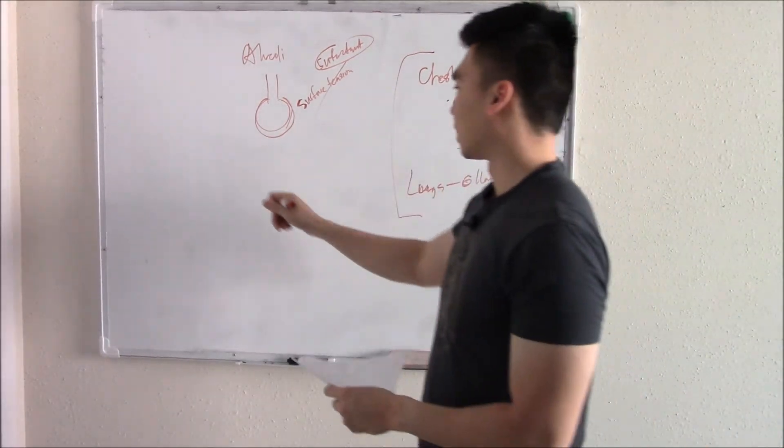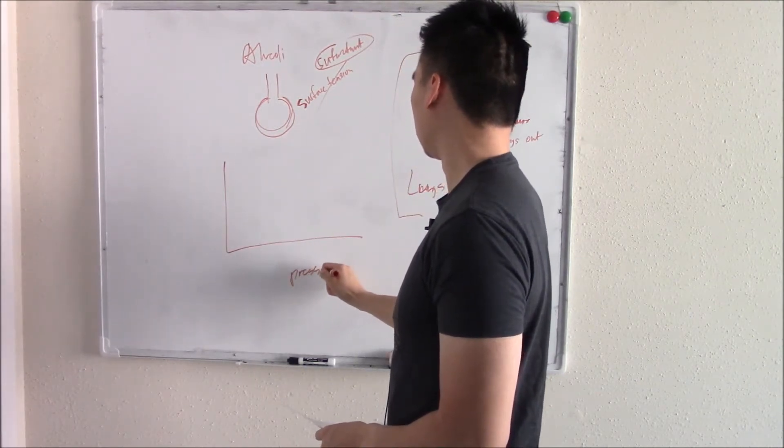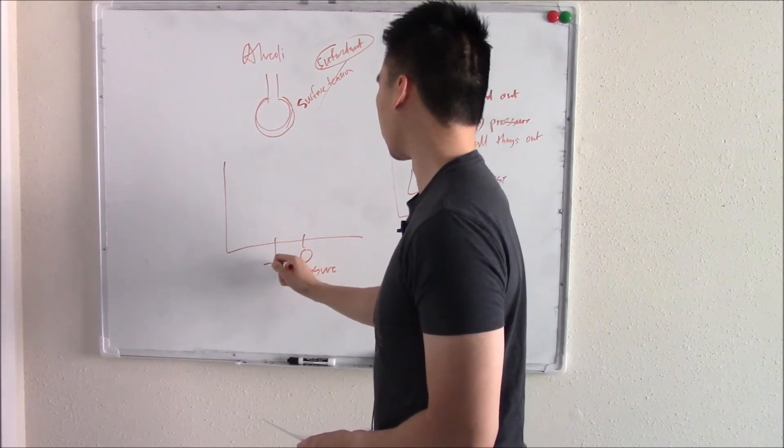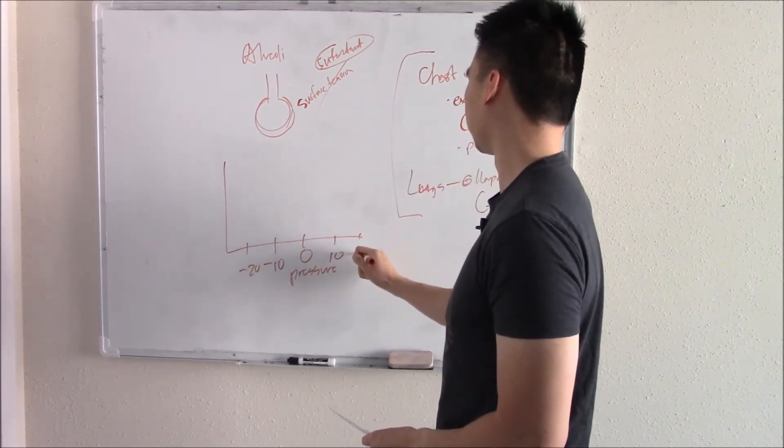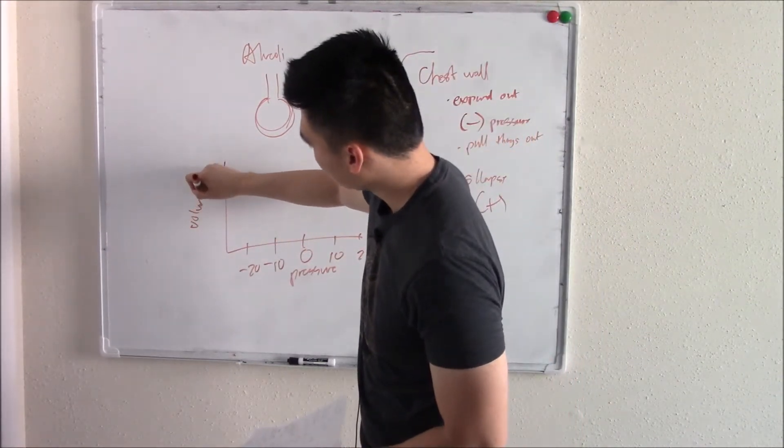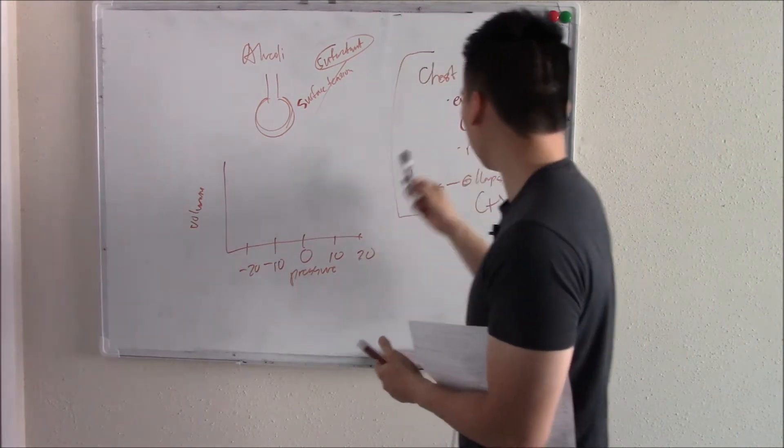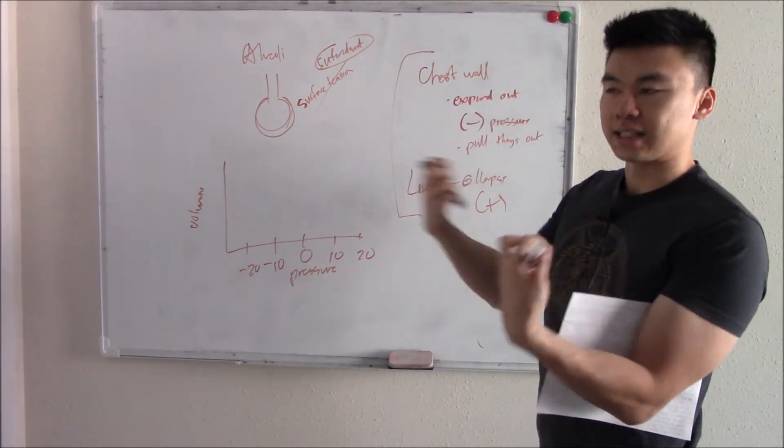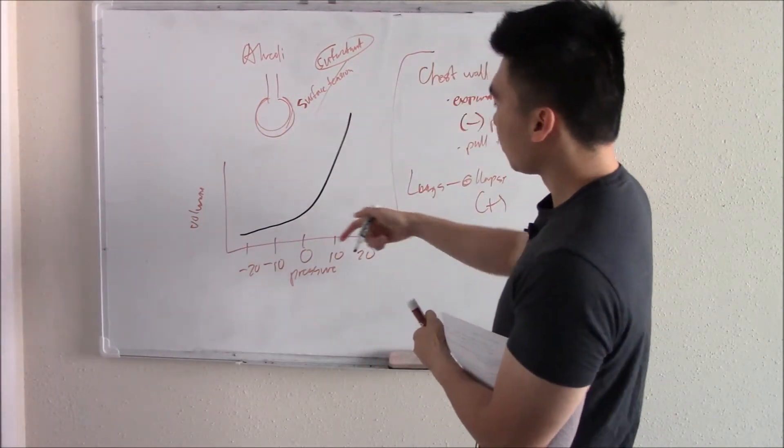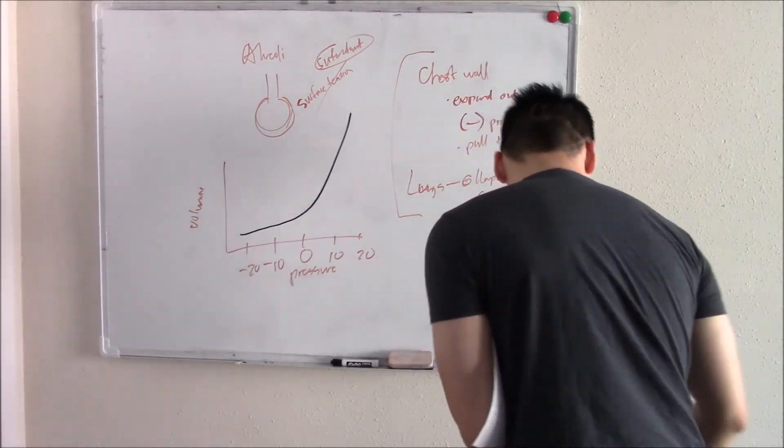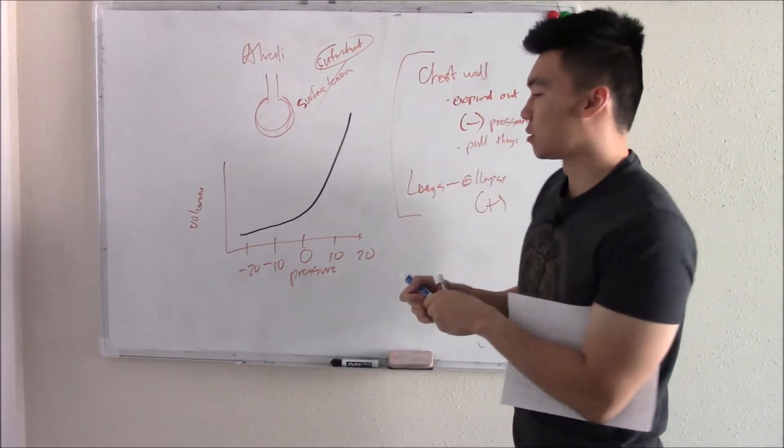So we can draw graphically on a graph. Here's, let's say, pressure. Here's zero. Here's negative pressure. Here's positive pressure. Here's volume. We say your chest wall spends most of its time in the negative zone, right? It wants to pull things out, suck things out. It has that negative pressure. So it spends most of its time on the negative side. But then spends a little bit of time on the positive side. Your lungs, on the other hand, don't want to go on the negative side. It basically wants to collapse on itself. So it's mostly positive.